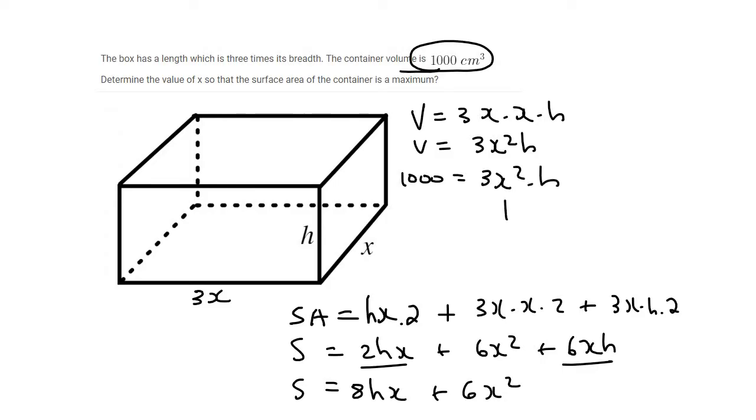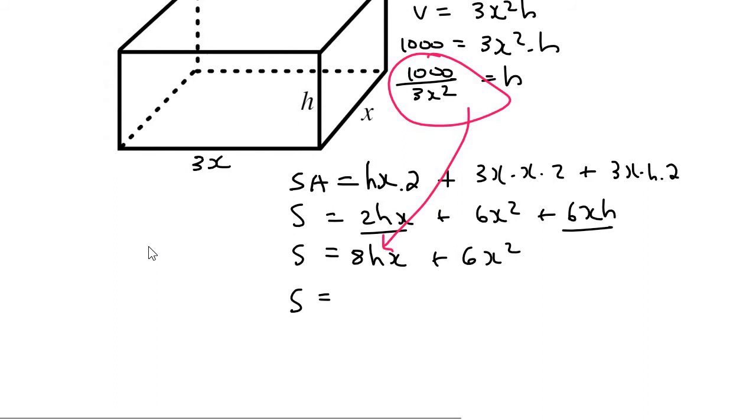We could get h alone as 1,000 over 3x squared. And so now we can use that in the place of h over there. And so that means we're going to have surface area equals to 8x. And then for the h, I'm going to replace that with 1,000 over 3x squared. And then the plus 6x squared is over there.